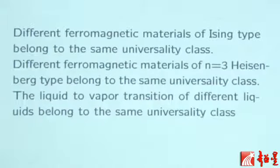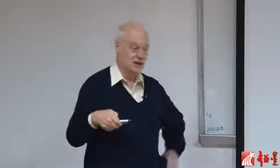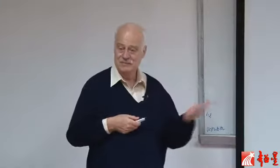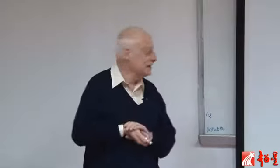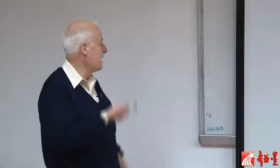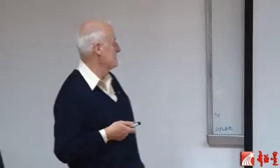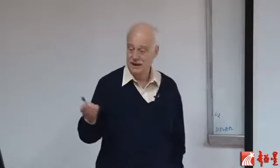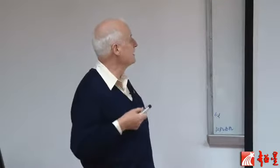Another example is Heisenberg spins, again of different lattices and different configurations. They belong to another universality class, and we understand why they belong to the same universality class or why they are in a different universality class. Another example is the liquid-to-vapor transition in different liquids — again, they belong to the same universality class.